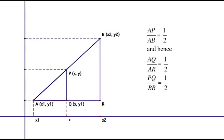P is the midpoint of AB. So AB is twice as long as AP and the ratio of the distance AP compared to AB is a half. One of the properties of similar triangles is that corresponding sides will also be in that same ratio. So AQ over AR equals a half and PQ over BR is a half.